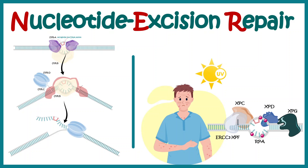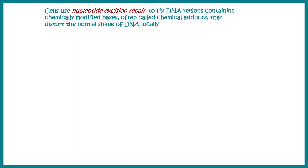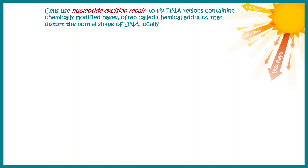In this video we are going to talk about the nucleotide excision repair system, which is one type of DNA damage repair. Cells use nucleotide excision repair to fix DNA regions which contain chemically modified bases, and often that leads to a distortion in the DNA helix. We are exposed to harmful radiation such as UV all the time.